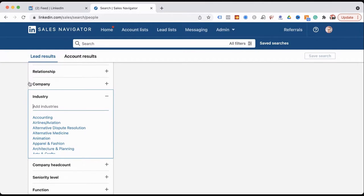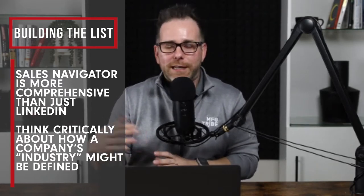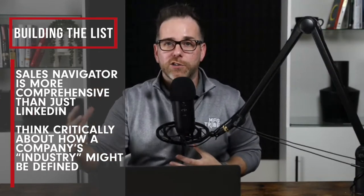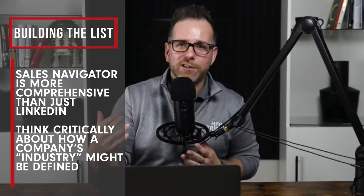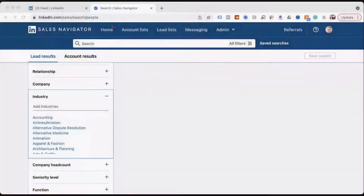When you're building this list, you want to make sure that when you think a company is in a specific category, they may not be. Do a little bit of research — type in a company name you know is a current customer or good prospect, go to their company page, and look at what industry they're in. That's because LinkedIn only has 150 of them.